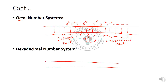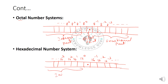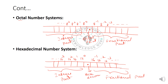For the hexadecimal number system, represented with base 16, on the right side we have 16 to the power of minus 1, minus 2, minus 3, and so on. On the left side we have 16 to the power of 0, 1, 2, 3, and so on. The left side represents the integer part, the right side the fractional part, separated by the hexadecimal point. So these are the positional representations for all four number systems: decimal, binary, octal, and hexadecimal.